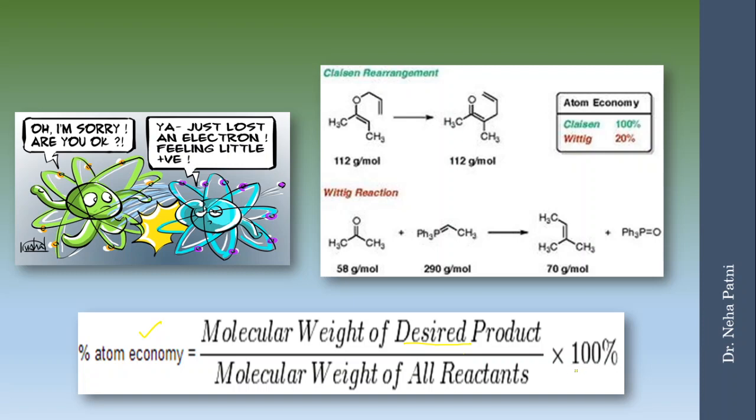In this example, if Claisen rearrangement is the reaction, this is the molecular weight of your reagent and product, and as per this formula if you divide and multiply by 100 your efficiency will come to around 100 percent. While in the case of Wittig reaction when these two reagents react and form this product there is one byproduct also. If you divide 70 by 58 plus 290 you'll get less which is 20 percent.